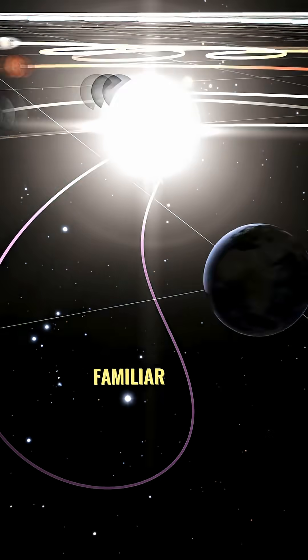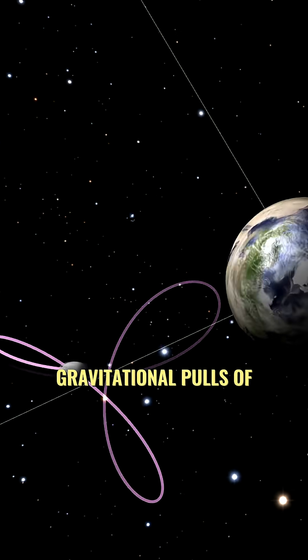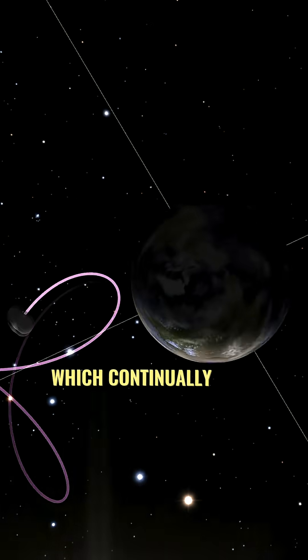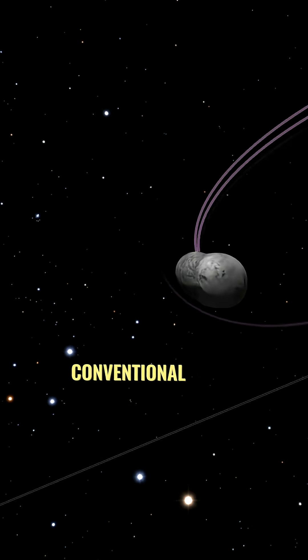Its odd flight path is caused by the competing gravitational pulls of the Earth and the Sun, which continually bend and torque the moonlet's motions, preventing it from achieving a more conventional orbit.